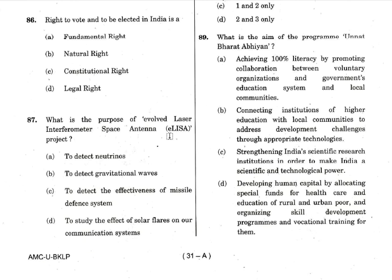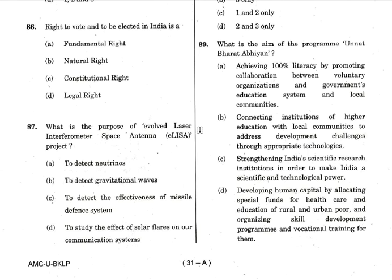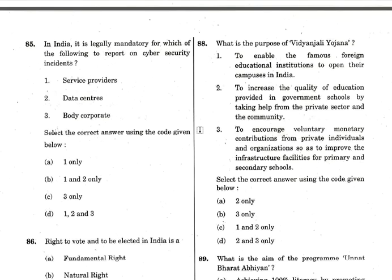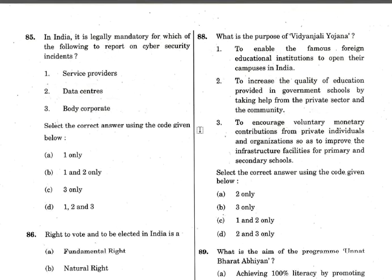Question 87 is about ELISA. The LIGO project — ground-based gravitational wave observatories — already exists in Washington and Louisiana, and a third one is planned in Hingoli district, Maharashtra. The European Space Agency is trying to put the same thing in space — three satellites in triangle formation around the Earth to observe gravitational waves. That project is called ELISA. Answer is option B: to detect gravitational waves. Know at least the name and purpose of major space missions.